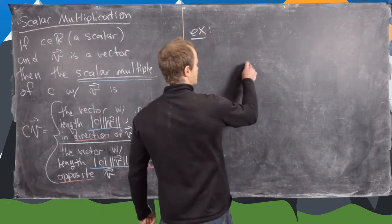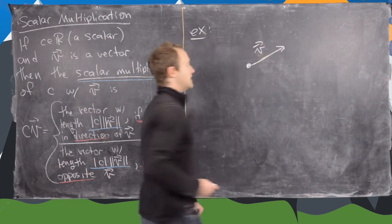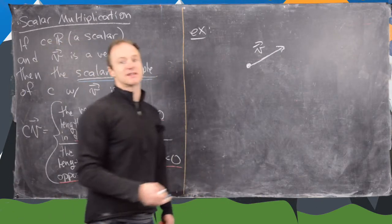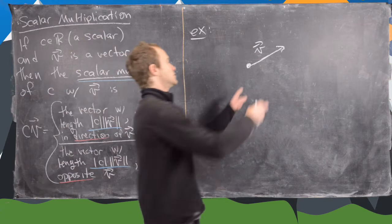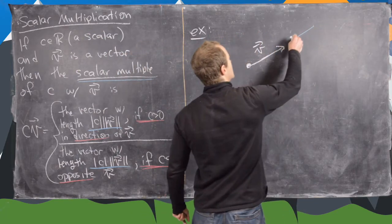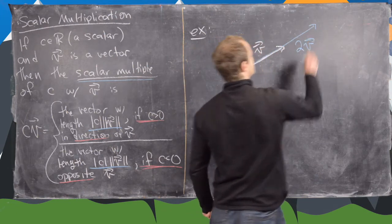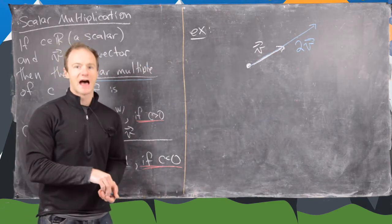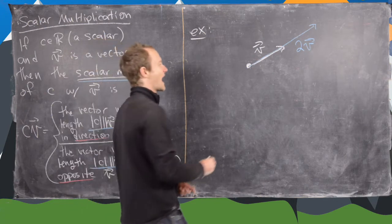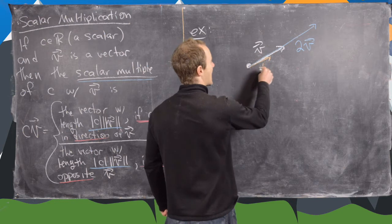So let's look at some graphical examples real quick. So let's say we have a starting vector like this, v. And let's look at a few examples. So let's maybe first look at 2 times v. So 2 times v would have the same direction, but it would have twice the length. So we could write 2 times v like this.